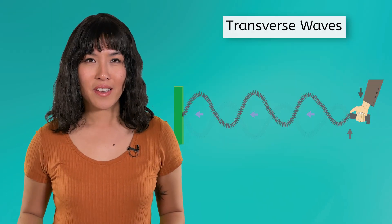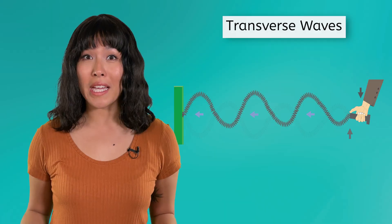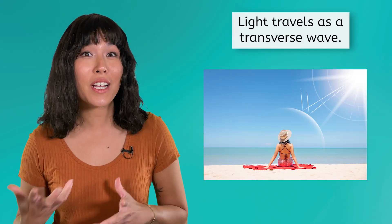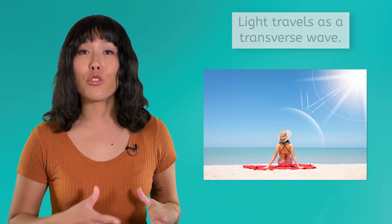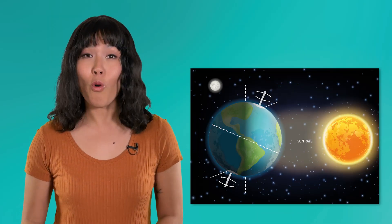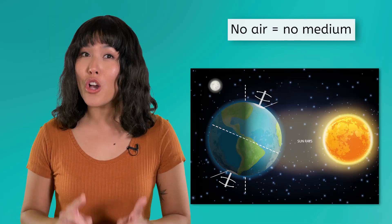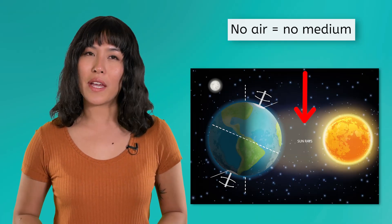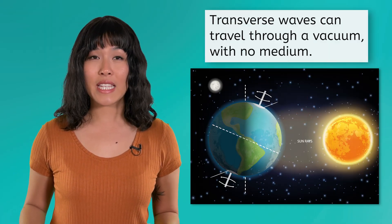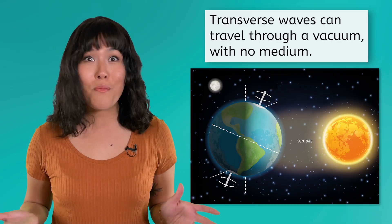Transverse waves can be created with water and by moving a rope up and down. Can you think of any other examples of transverse waves? We mentioned the waves that make up sunlight earlier. It turns out that all light travels as a transverse wave. But there's an interesting catch here. We said that when sunlight hits you on the beach, it has traveled through air as its medium, and that's true for the very end of the wave's journey. But what about the part of the wave's journey through space? Before it reached our atmosphere, there was no air at all for it to travel through. While transverse waves often travel through mediums such as air and water, they don't have to. Transverse waves can travel through the vacuum of space with no medium at all.